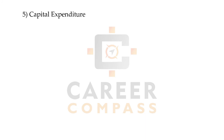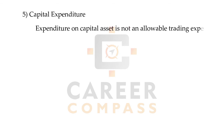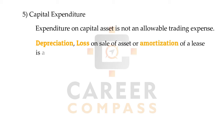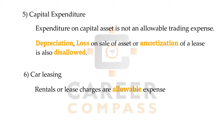The fifth item is capital expenditure. If we are following the accrual basis, capital expenditure is not an allowable deduction. Businesses also charge depreciation, but that too is not allowed for tax purposes. Instead of depreciation, HMRC will allow capital allowances to the business.